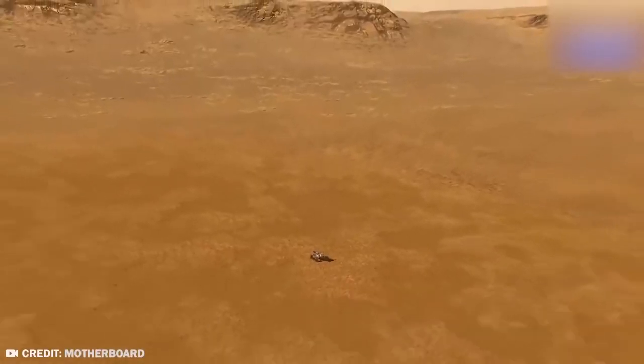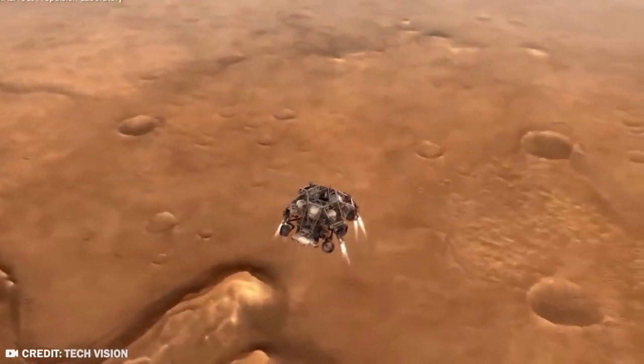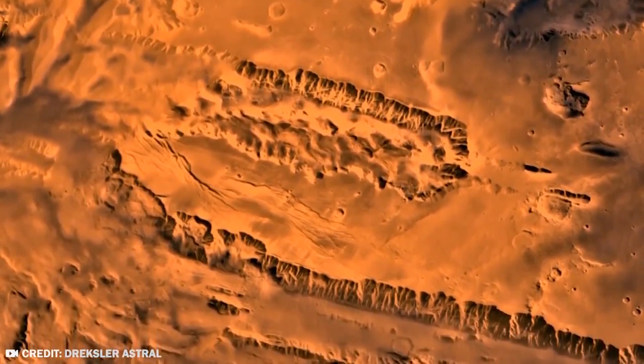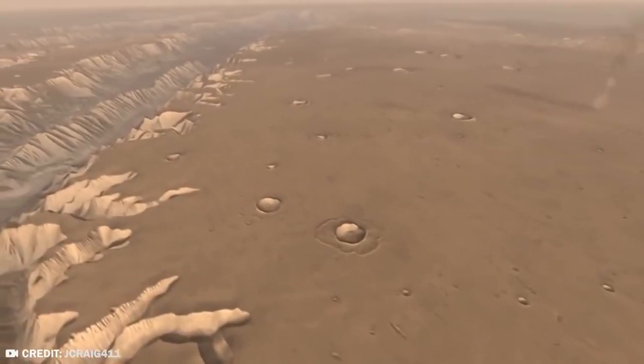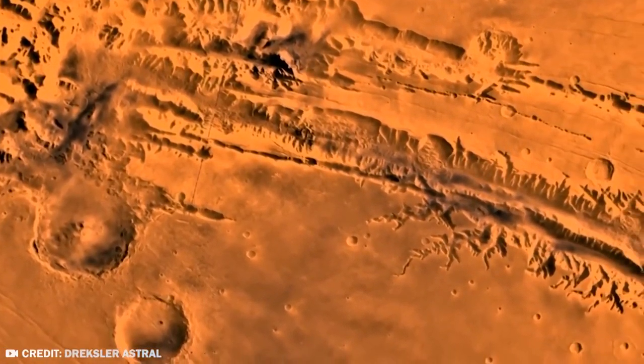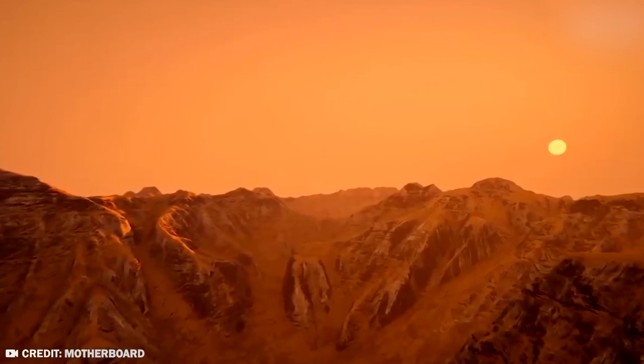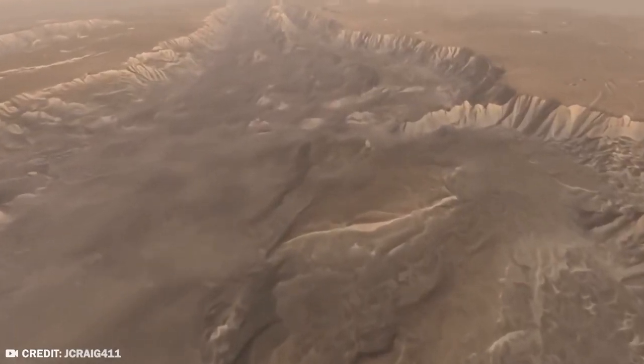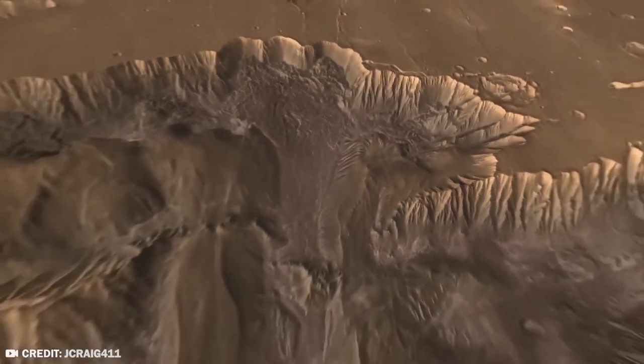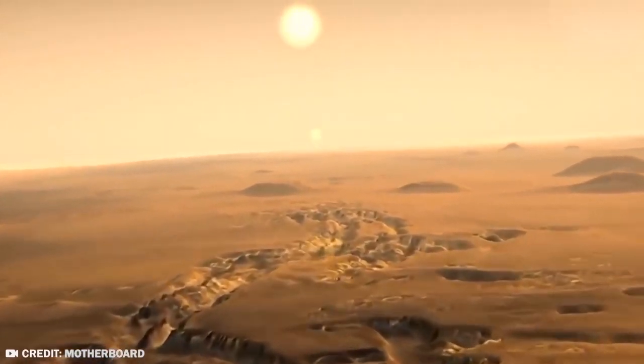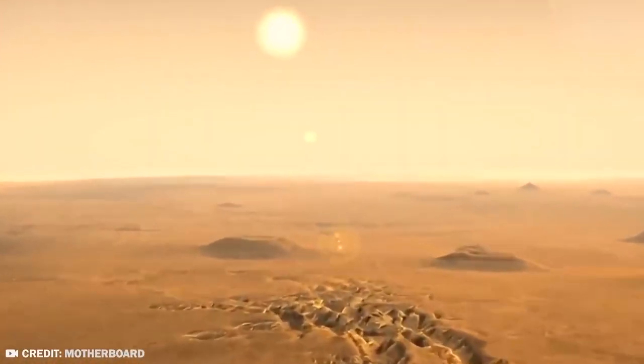Valles Marineris, the largest canyon in the solar system, spreads substantially across the face of Mars, spanning more than 1,864 miles, towering as much as 372 miles high, and plunging as much as 5 miles deep. It is a vast place that dwarfs earthly canyons such as Arizona's Grand Canyon. For comparison, the Grand Canyon is nearly 498 miles long, 18.6 miles across, and 1.1 miles deep.